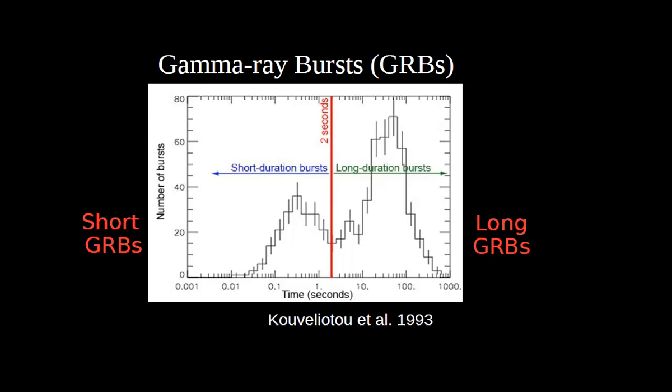Before GW170817, some argued short and long GRBs might be the same phenomenon — a burst is 'short' if it stops before two seconds, otherwise 'long.' But the 2017 detection of a short GRB coincident with a binary neutron star merger confirmed a distinct theoretical origin. The current consensus returns to two distinct classes: mergers for short GRBs and collapsars — massive star collapse of 10–12+ solar masses — for long GRBs.